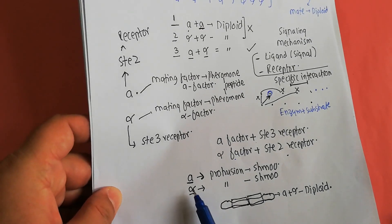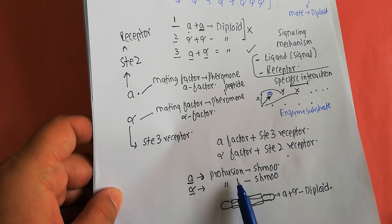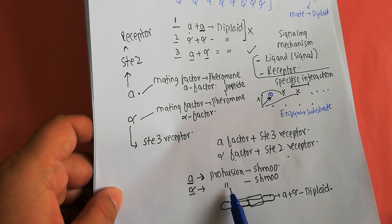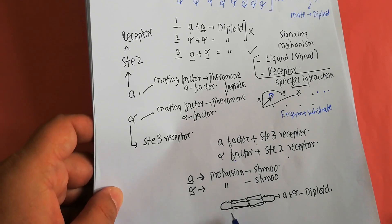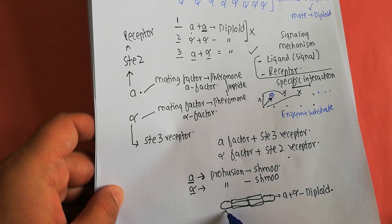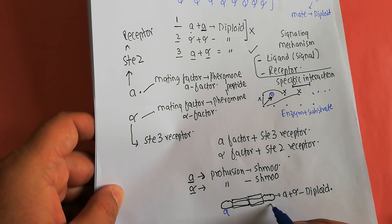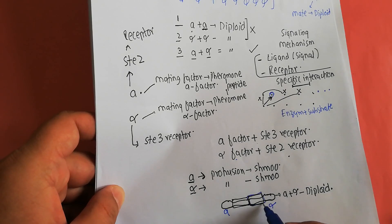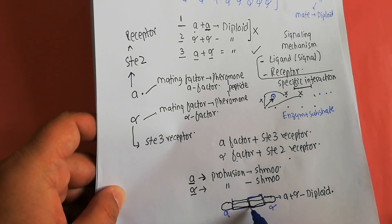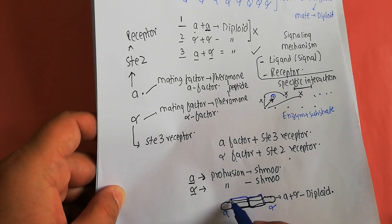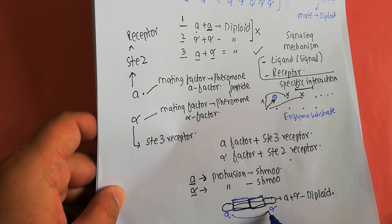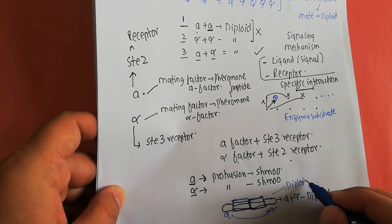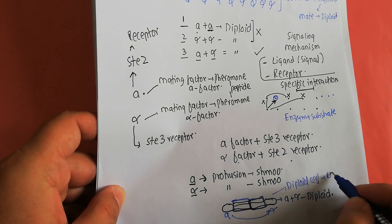The A cell produces a particular protrusion known as SHMU, and the alpha cell also produces a particular protrusion known as SHMU. As shown, this is the A cell and this is the alpha cell; the protrusion produced by the alpha cell and the protrusion produced by the A cell allow them to combine with each other to give rise to a diploid cell under normal conditions.